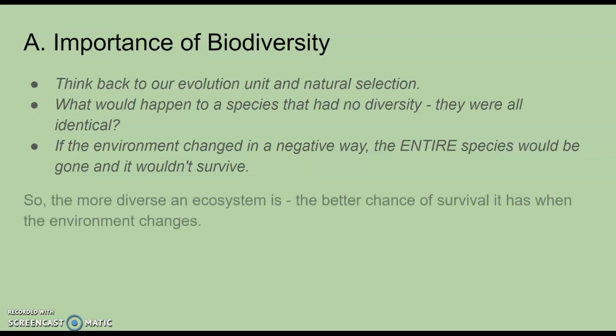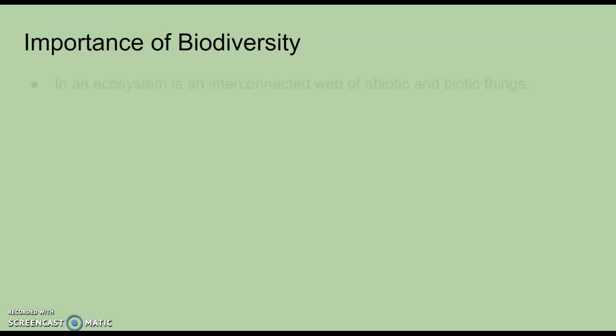The same thing applies to an ecosystem — the more diverse an ecosystem is, the better chance of survival it has when the environment changes. And the environment is always going to change, whether a new species comes along or through seasonal cycles. The more diverse an ecosystem is, the more likely most organisms are to survive. We might lose a couple here and there, but if it's really diverse, we'll still have a good variety helping it survive.